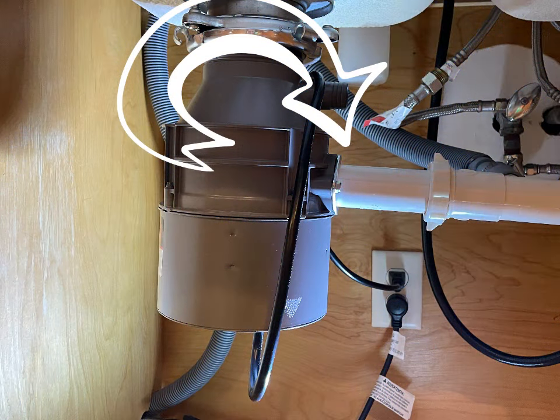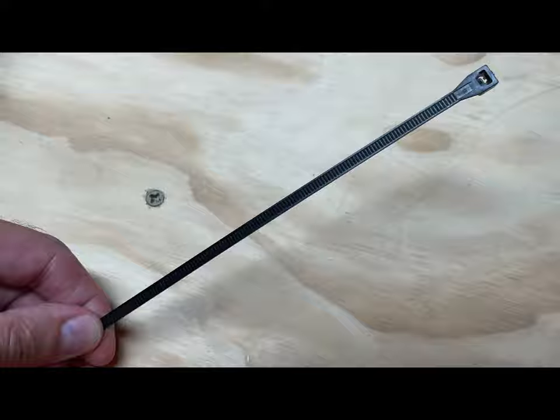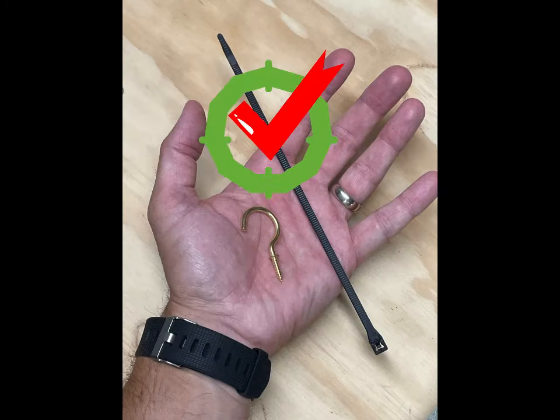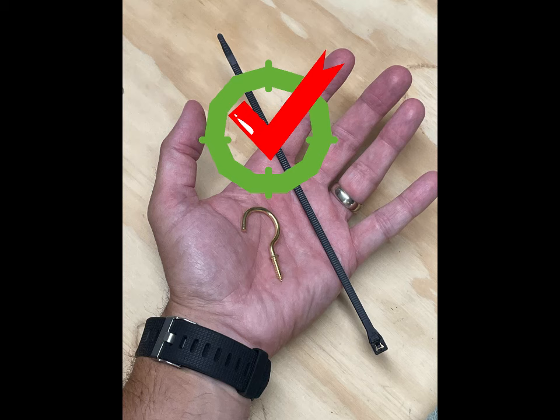This is how I did it. The easiest method only takes two simple items, a zip tie and a cup hook. First, look for a good place to install the cup hook. These cup hooks are usually self-tapping, so a little pressure and twisting and it should grab on the wood.